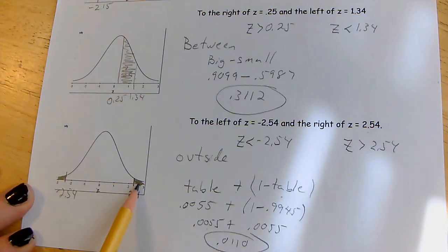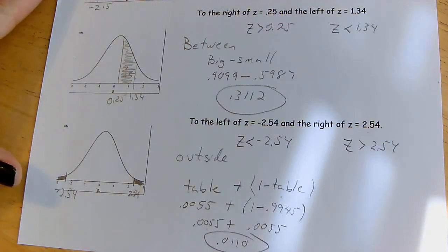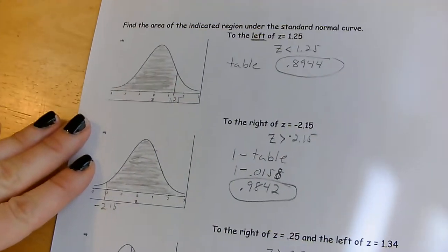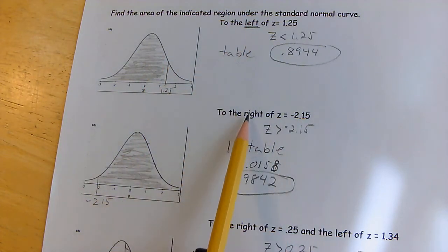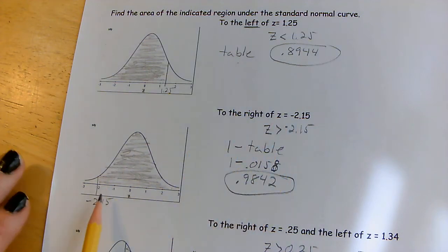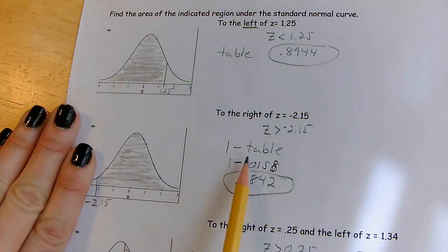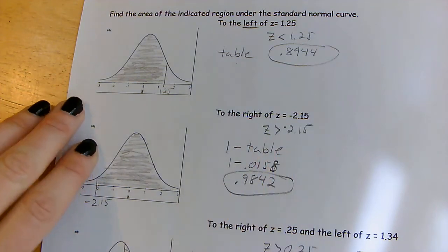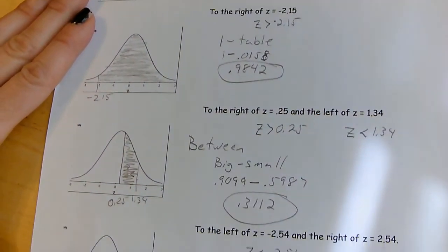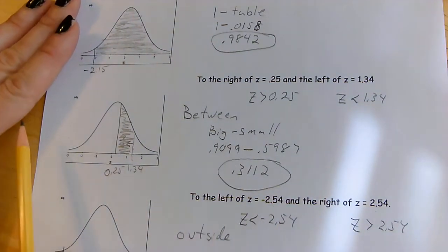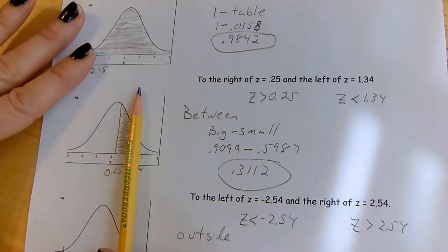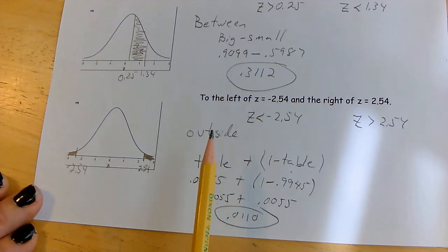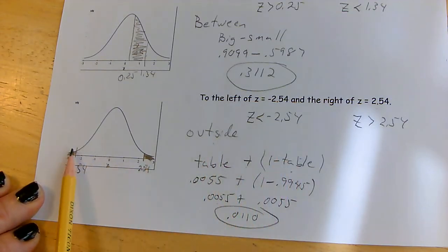To summarize, there are four ways to read the z-table: if it's to the left of a value, read directly from the table; if it's to the right or greater than, do one minus the table reading; if it's between two values, take the larger reading minus the smaller one; and if it's outside two values, get each tail separately — one directly from the table and one as one minus the table — then add them together.